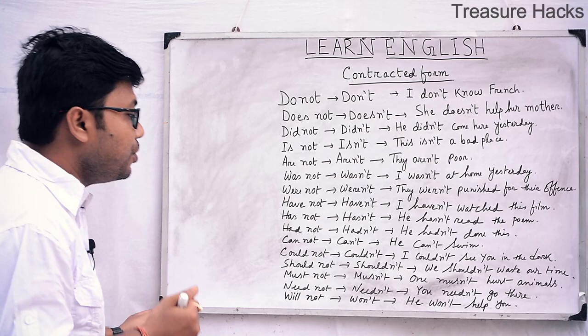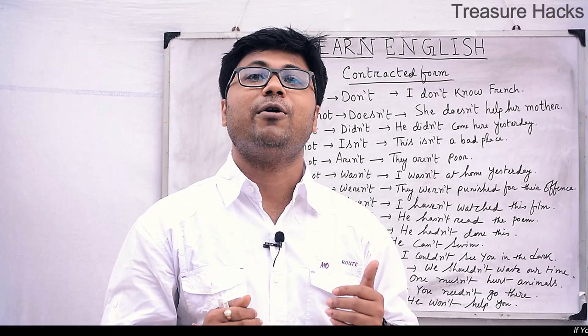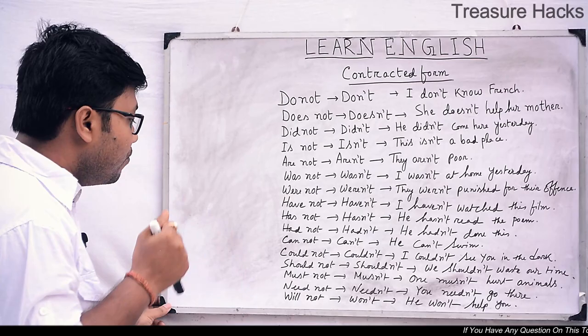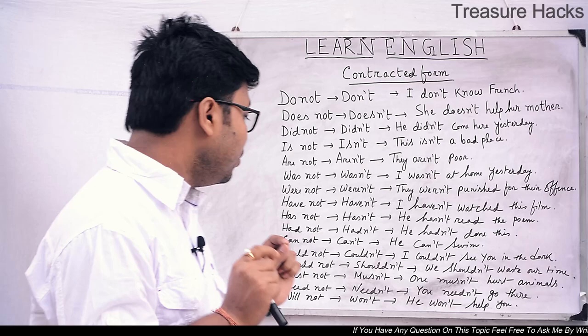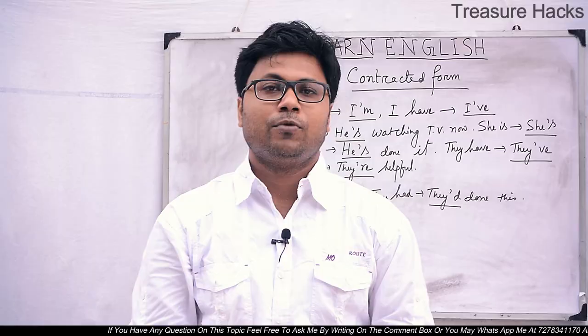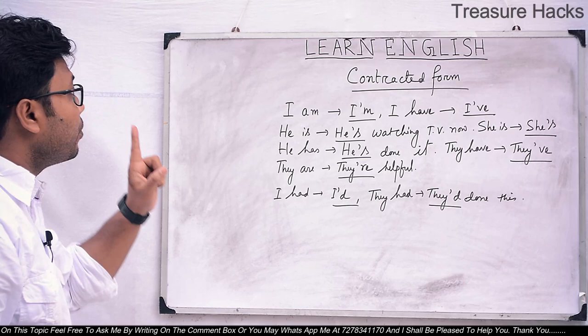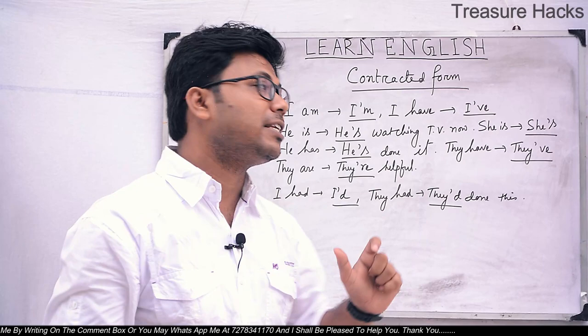Next, 'need not' — 'need not' in contracted form is 'needn't'. For example: You needn't go there. Next, 'will not' in contracted form is spelled W-O-N apostrophe T — 'won't'. For example: He won't help you.